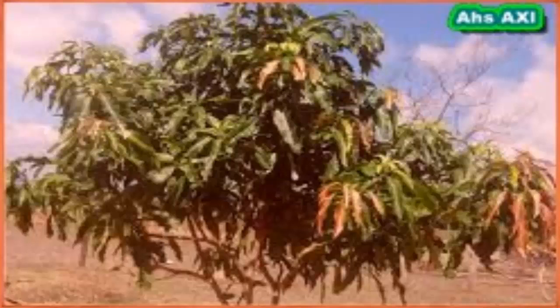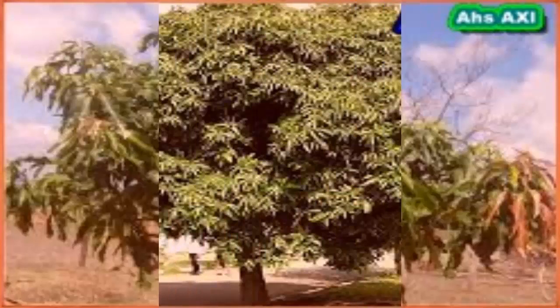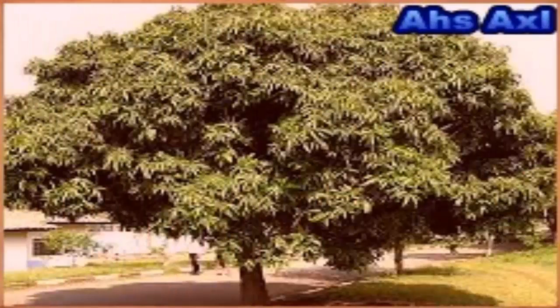Mango leaves are simple and alternate, 15 to 35 centimeters long and 6 to 16 centimeters wide. The young leaves are reddish pink in color. Mango buds grow from the tip of a branch, and a ripe mango bud starting up takes about three to six months.